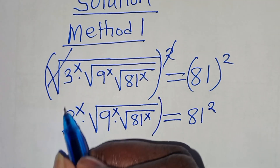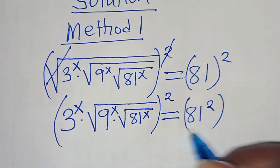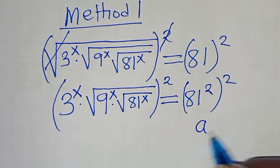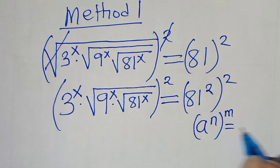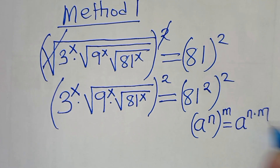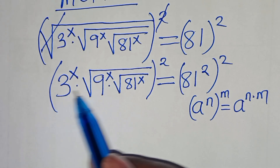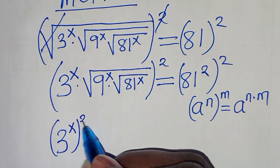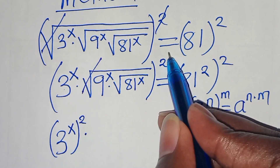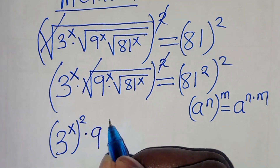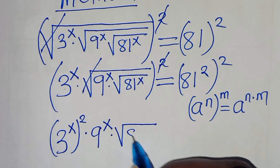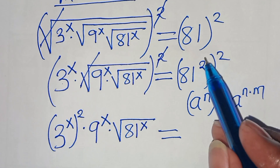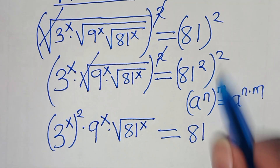The next step is to square both sides again, so that now 81 is raised to the power of 2 times 2. This is in the form of a to the power of n times m, which we can express as a to the power of n times m. Therefore, we have 3 to the power of x raised to the power of 2, multiplied by 9 to the power of x, multiplied by the square root of 81 to the power of x, equal to 81 raised to the power of 4.